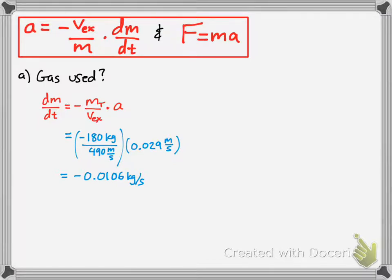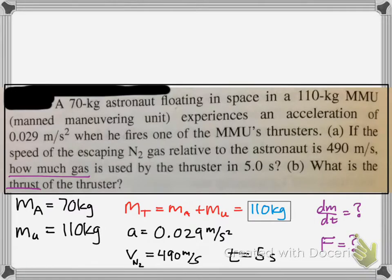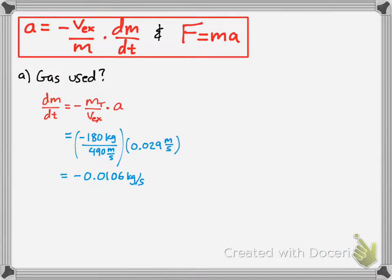You have, plug in the calculations, and you have negative 0.0106 kilograms per second. So, that's how much mass is losing per second. Now, the question was how much in 5 seconds. So, simply multiply by 5 to get rid of the seconds, and it'll tell you exactly how much mass was lost. So, 0.053 kilograms.